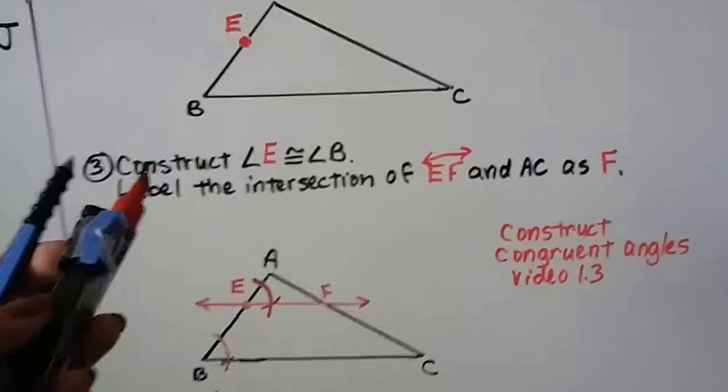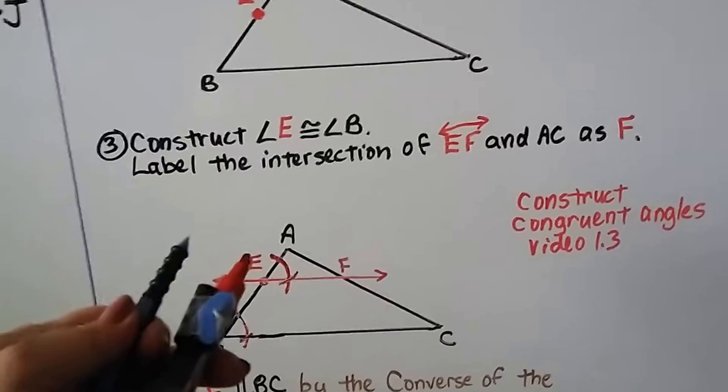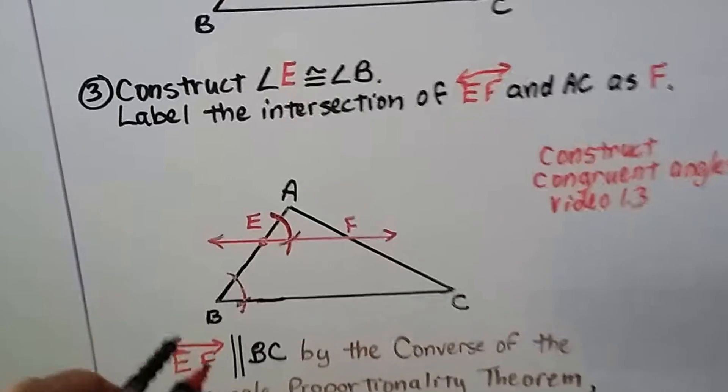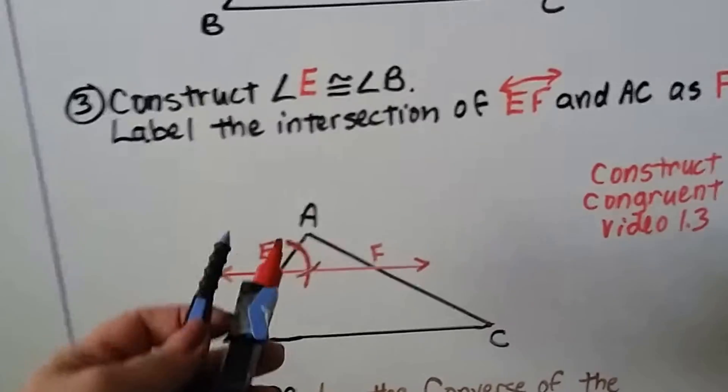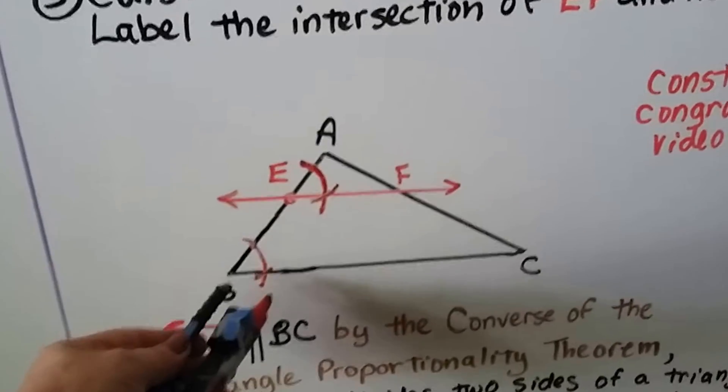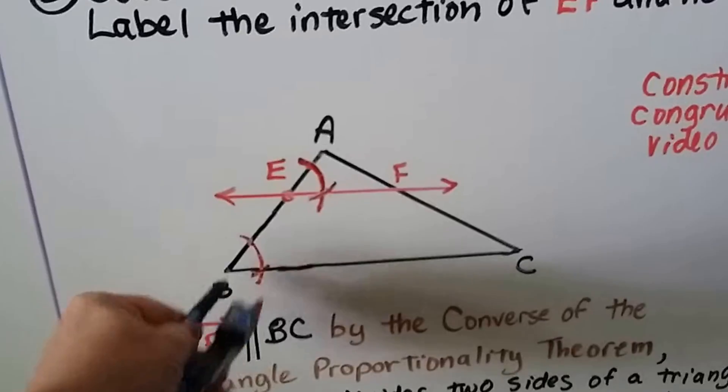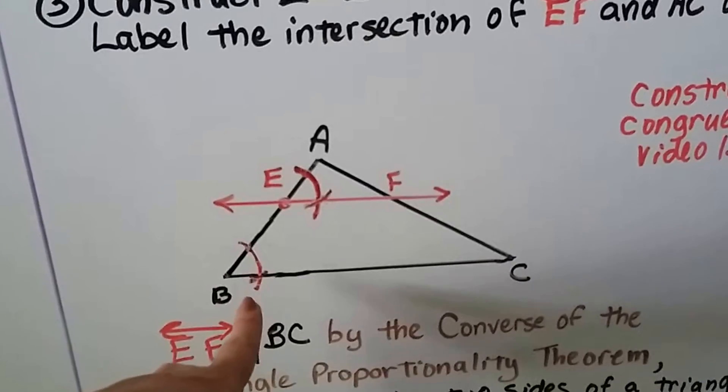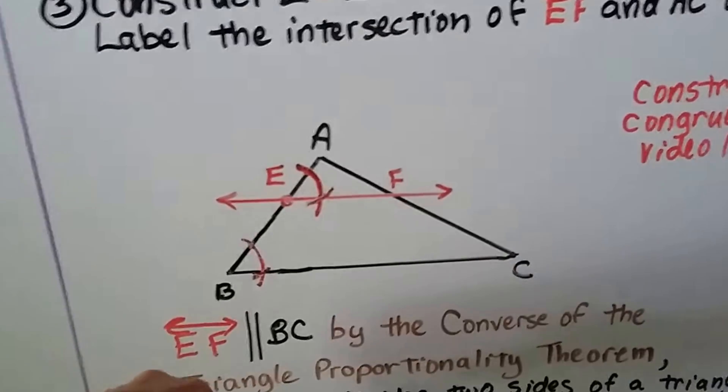So we're going to construct this angle E and the way we do it is we take our compass and because mine is so short, I had to do a very small setting. And you put the point on B and you make an arc that goes through segment AB and BC. You want it to go through both lines.